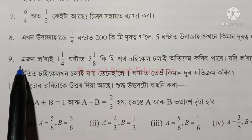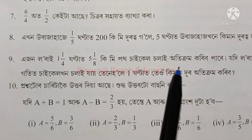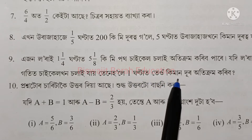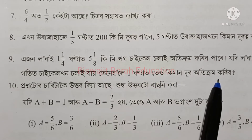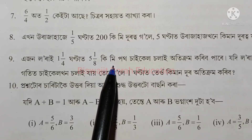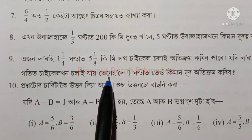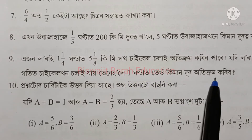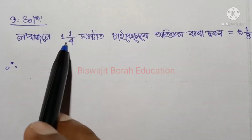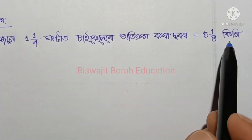The next problem: a bicycle (cycle) travels. In 1 and 1/4 hours it covers a distance of 5 and 1/8 kilometers. We need to find how far it goes in one hour — i.e., how many kilometers does the cycle cover per hour given these values?